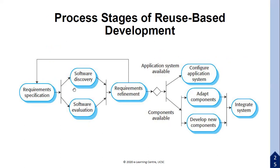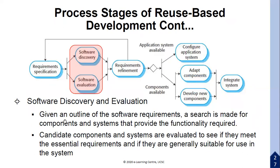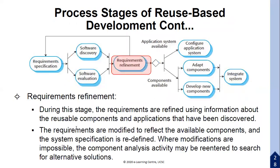In reuse-oriented software engineering, you first identify the requirements and then refine them. You then configure the application, adapt components, develop new components, and integrate the system. You specify the requirements, then perform software discovery and evaluation — given the outline of the software requirements, a search is made for components and systems that provide the required functionality. Candidate components are evaluated to see if they meet the essential requirements and are suitable for use.